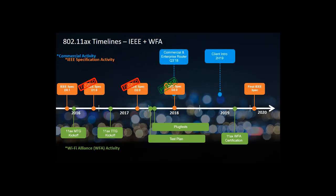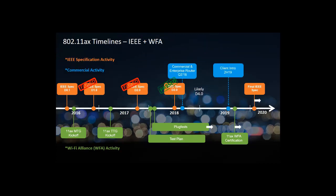Commercial activity has already started, with Ruckus and other Wi-Fi companies announcing 11ax APs. 11ax, or Wi-Fi 6, will be a profound change in the Wi-Fi industry. It will bring faster speeds than previous technologies in the 2.4 and 5 GHz bands. Increased range, better performance in environments where many devices compete for bandwidth, and enhanced power efficiency are all characteristics of 11ax.